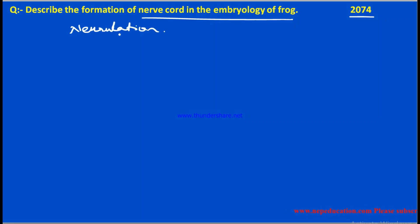We are going to explain neurulation in the frog. First, we have to make the concept clear. Then after that, we will look at the language we need to use. This is a three-mark question. And we know there is gastrulation involved.